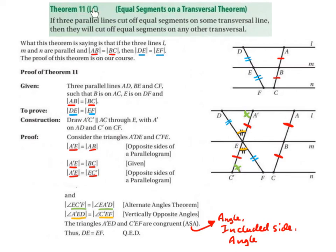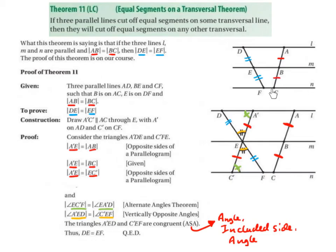Theorem 11 for Leaving Cert maths: the Equal Segments on a Transversal theorem. If three parallel lines cut off equal segments on some transversal line, then they will cut off equal segments on any other transversal. If the distance from A to B equals the distance from B to C, represented by two little red lines, then the distance from D to E equals the distance from E to F.